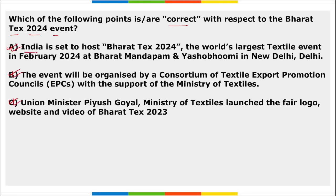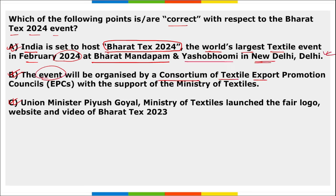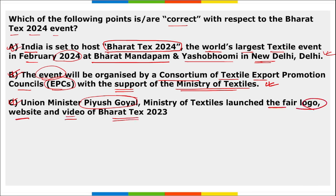Option A: India is set to host Bharat Tex 2024, the world's largest textile event, in February 2024. The location will be Bharat Mandapam and Yashobhoomi in New Delhi. Option B: The event will be organized by the Consortium of Textile Export Promotion Councils with the support of the Ministry of Textiles. Option C: Union Minister Piyush Goyal launched the fair logo, website, and a video of Bharat Tex 2023. All three options are correct, and this event will be held in 2024.